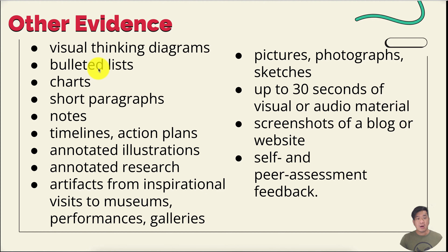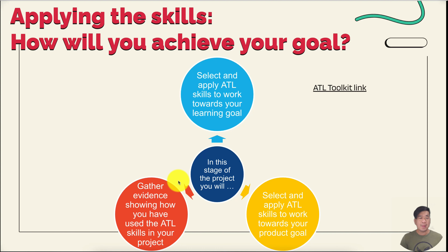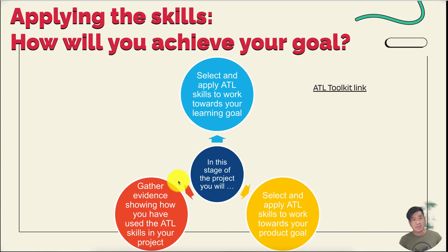Here are other examples — please pause the video if you want to copy this. In applying ATL skills for your goal, you have to remember to select one ATL skill for the learning goal and one skill for the product. You can select more than one, but I would suggest you concentrate on one skill to demonstrate what you have learned so far.